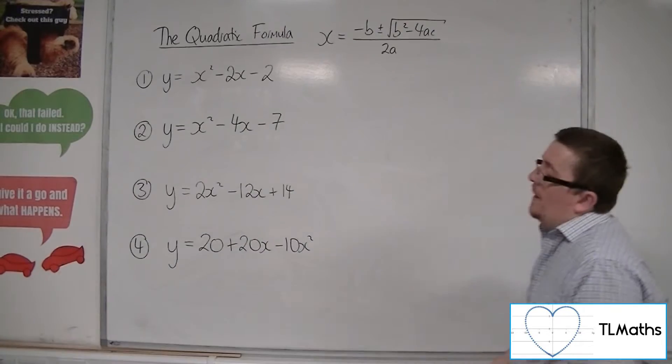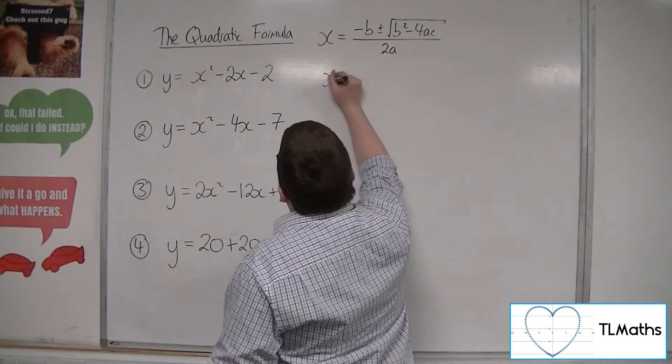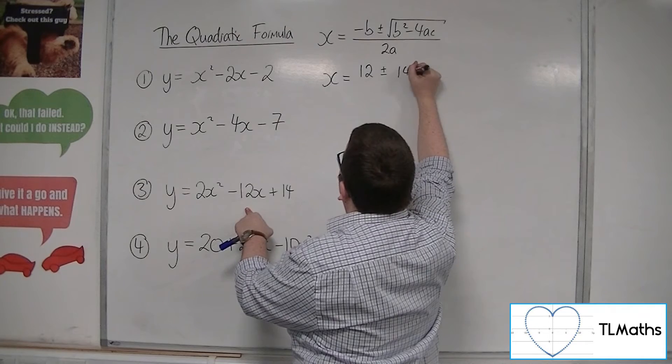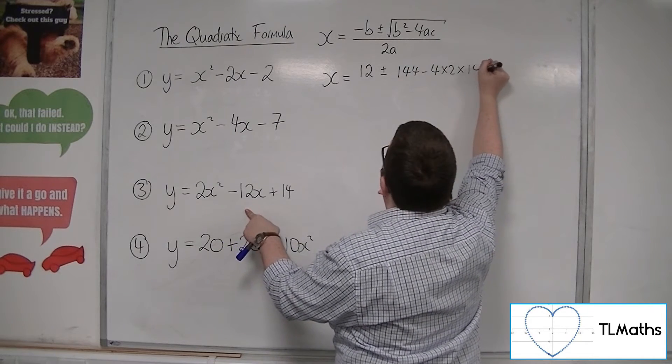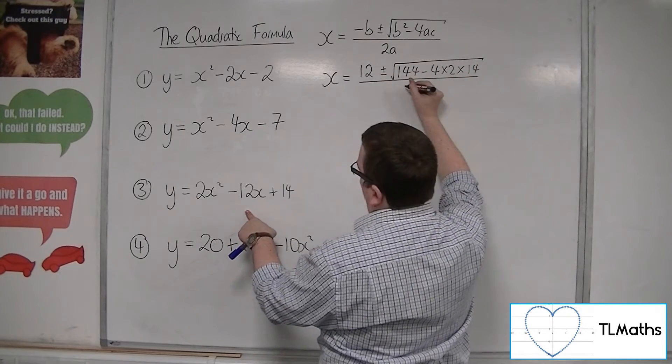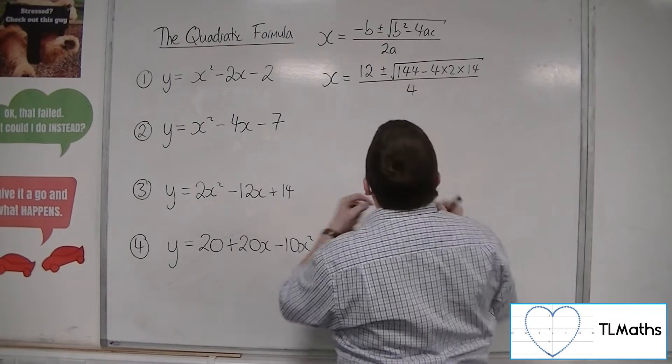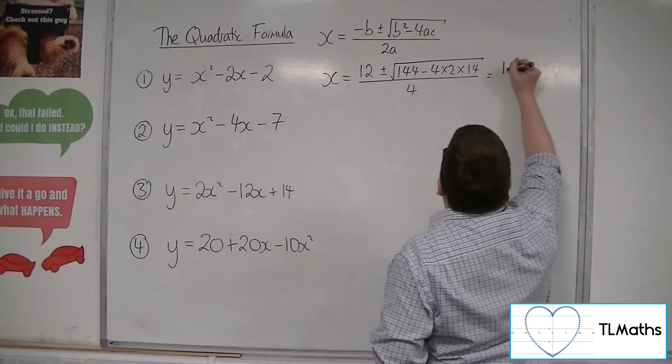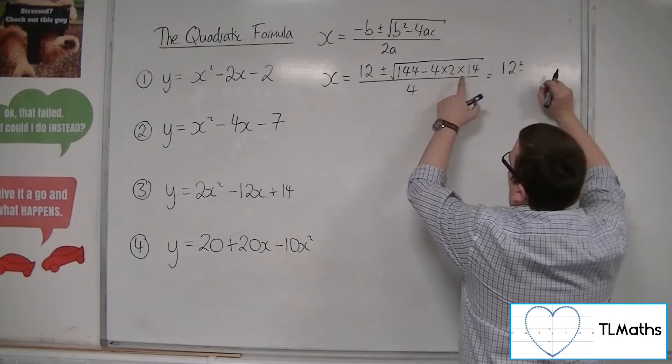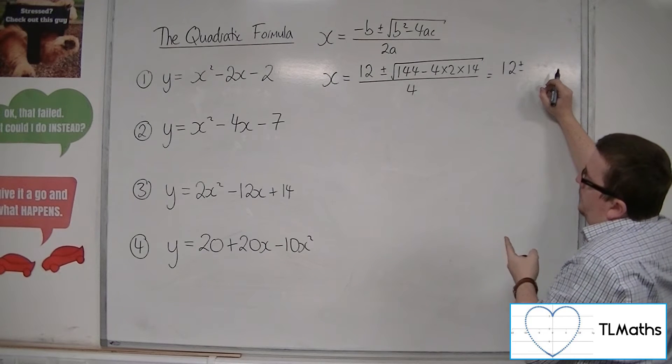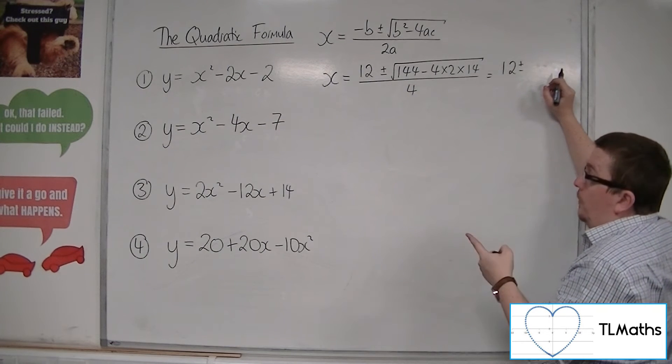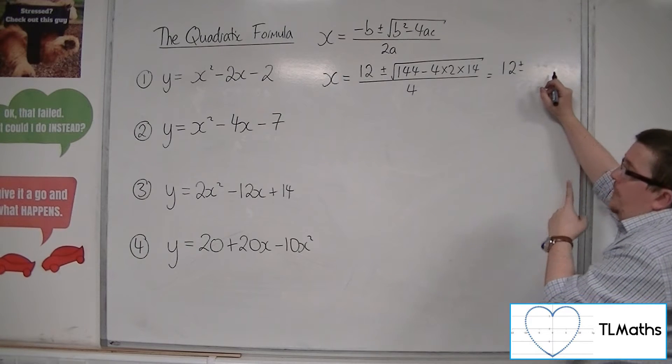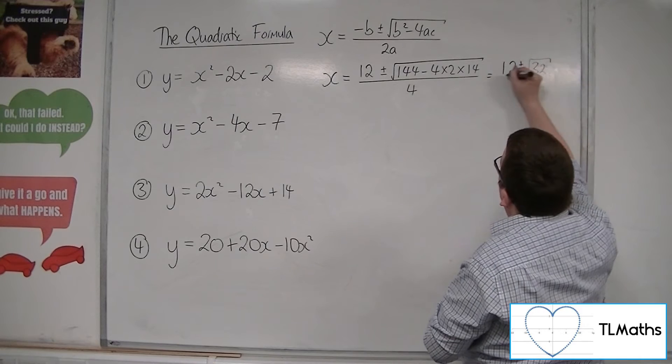Let's have a look at number 3. y is equal to 2x squared minus 12x plus 14. So x is equal to minus b, so 12, plus or minus b squared, 144. Take away 4 times 2 times 14, square rooted, all over 2a, so 4. OK, so that's equal to 12 plus or minus. Now 4 times 2 times 14. Well, 4 lots of 14 is 56. Twice that is 112. So 144 take away 112 will get me down to 32. So this is the square root of 32 over 4.